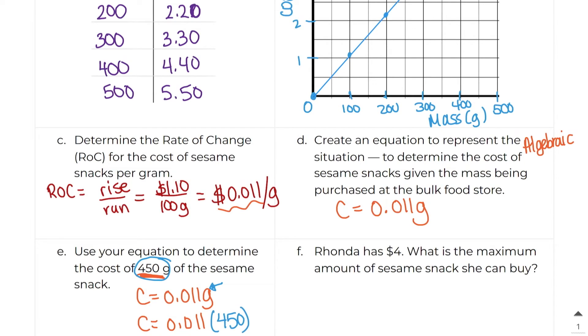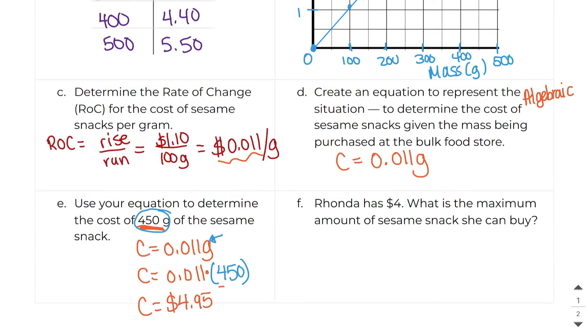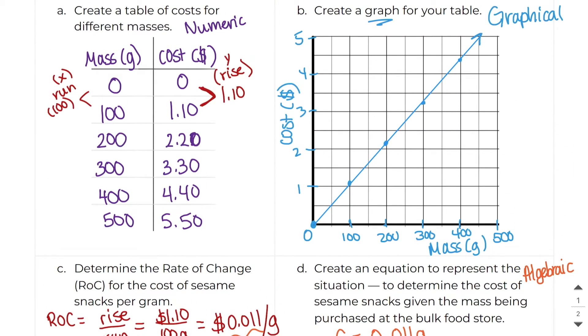And this right here is multiplication. So 0.011 times 450 right here gives me $4.95. So we know that the cost of 450 grams of the snack is $4.95. Now let's look at our graph right here. 450 falls right here. And if I go up here, I can see, oh, it's almost $5. So that $4.95 definitely seems to make sense.